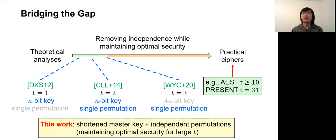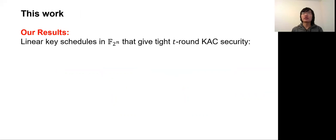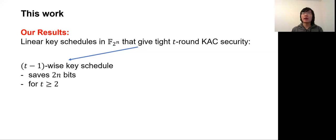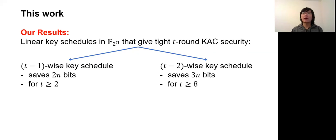In this work, we focus on the key schedules. In particular, we make the first step towards reducing the master key length and understanding the security of KAC with coordinated subkeys for large rounds, under the assumption that the permutations are independent. We focus on studying linear key schedules over field F_{2^n}. Our first result provides a (T-1)-wise key schedule that saves 2n-bit master key for arbitrary round T. We also show a (T-2)-wise key schedule that saves 3n-bit master key for KACs having at least 8 rounds, while maintaining optimal security.